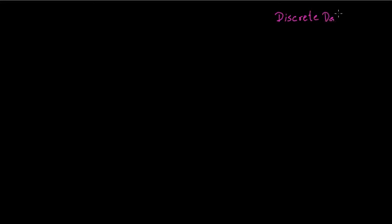Discrete data is any data that can be counted. For example, the number of people in a room — it can be counted, so it is discrete data. Discrete data is countable data.